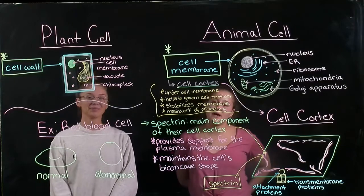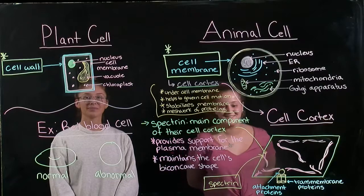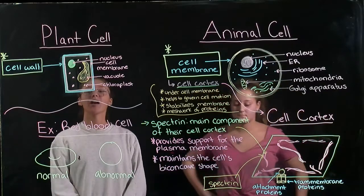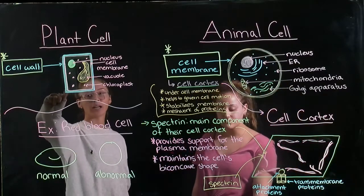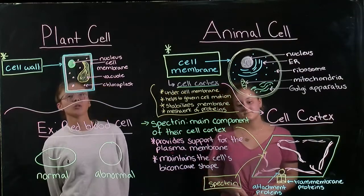In this video we will discuss how the plasma membrane is mechanically stabilized in plant cells versus animal cells. In plant cells they have a cell membrane and then the cell wall, which is a fibrous layer of proteins.